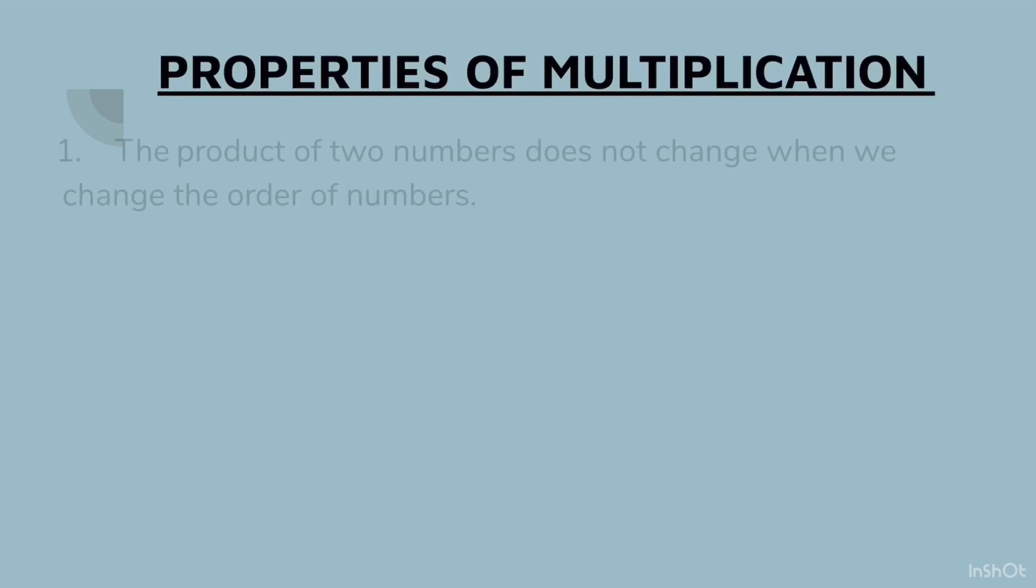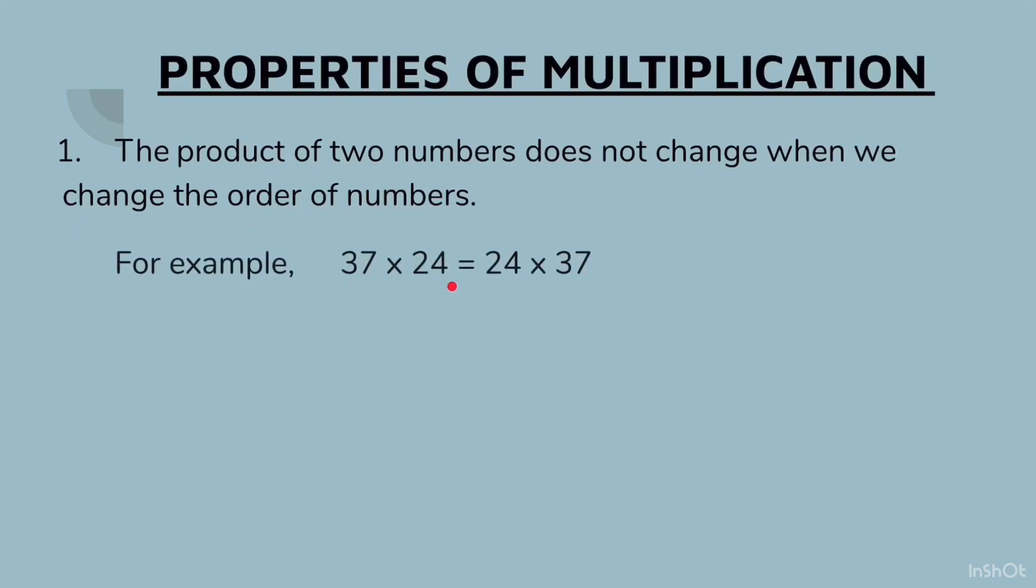There are five basic properties. First property: the product of two numbers does not change when we change the order of numbers. Let us take an example: 37 × 24 is same as 24 × 37. Both will give us the exact same answer.